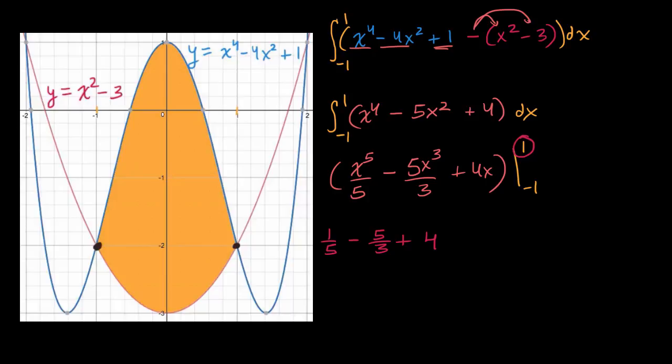And now, let us evaluate it at negative one. So minus, if this is negative one, we're going to negative one-fifth. And this is going to be plus five-thirds. Plus five-thirds. And then this is going to be minus four. Minus four.